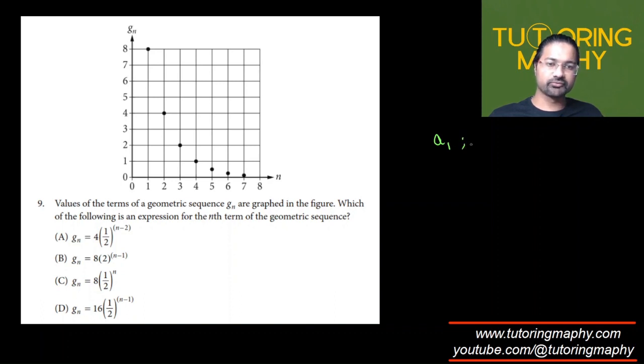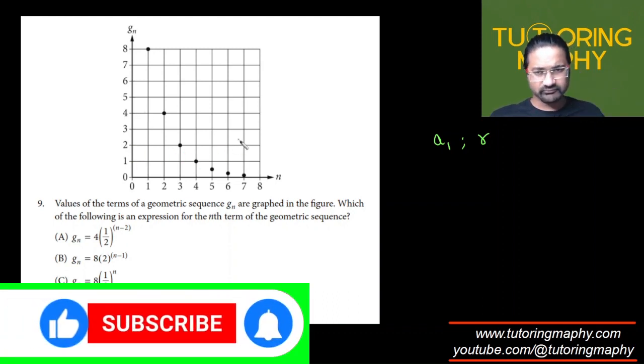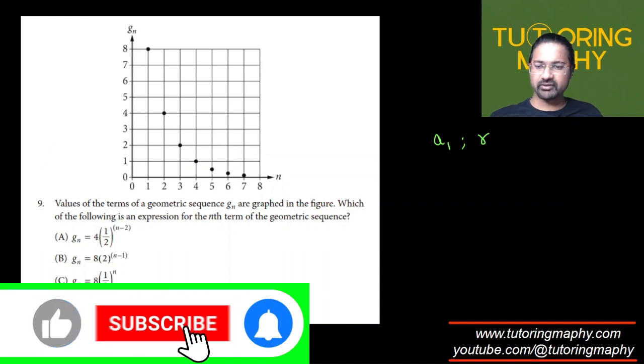There are two ways to solve this. Either we can reverse engineer and plug in the value of n as 1, for instance, and it should give us the value as 8. So we just plug in n as 1 and see which one is giving us 8, and that way we can just keep plugging in, ruling out options, and we can figure that out.